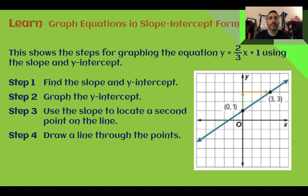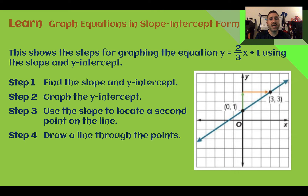Graph equations in slope-intercept form. This shows the steps for graphing the equation y equals two-thirds x plus one using the slope and the y-intercept. So in order to go from an equation to graphing it, we're going to follow the steps. First we're going to find the slope and the y-intercept from our equation. Our slope is our value of m, which is in front of x, and our y-intercept is the value of b.